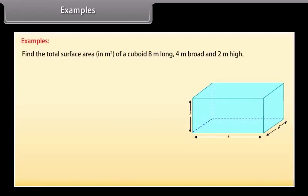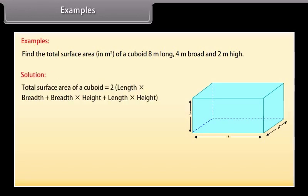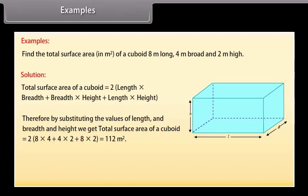Example: Find the total surface area in square meters of a cuboid 8 meters long, 4 meters broad, and 2 meters high. Solution: We know that the total surface area of a cuboid = 2(lb + bh + lh). Substituting the values: TSA = 2(8×4 + 4×2 + 8×2) = 2(32 + 8 + 16) = 112 square meters.